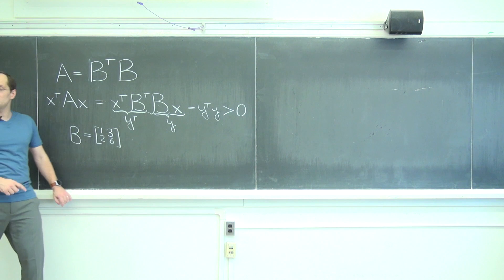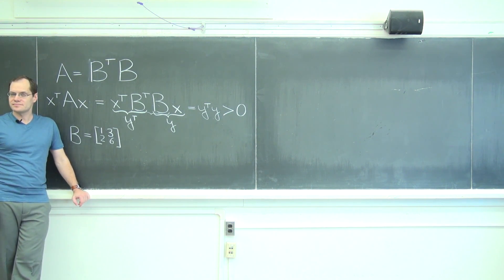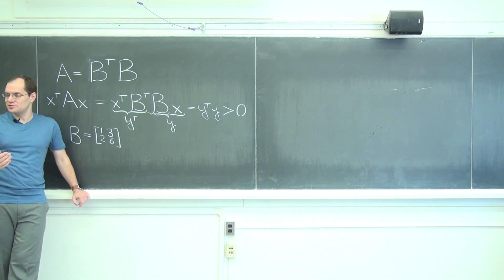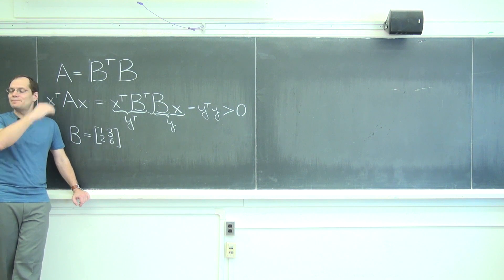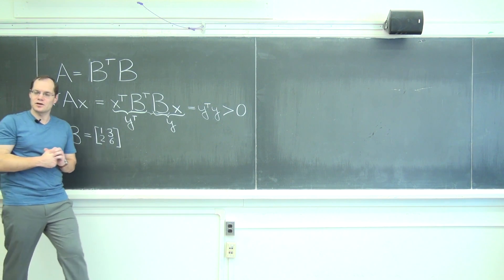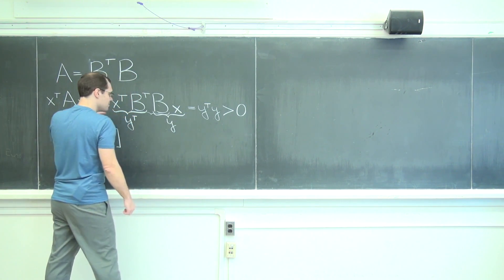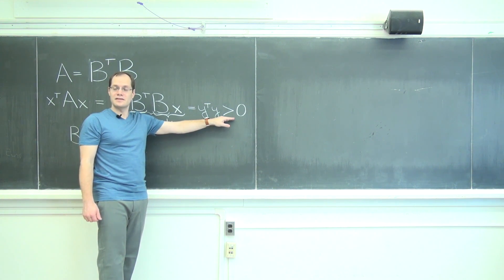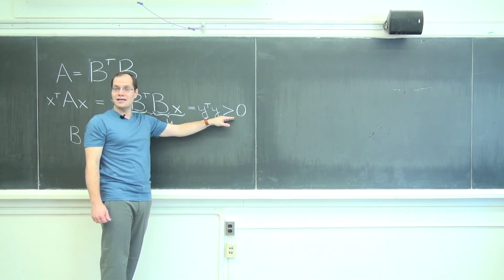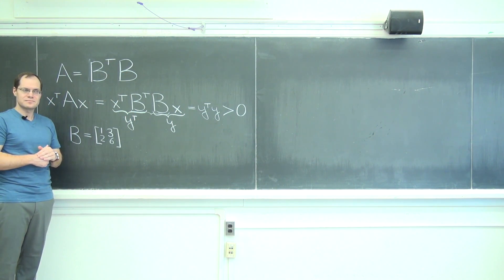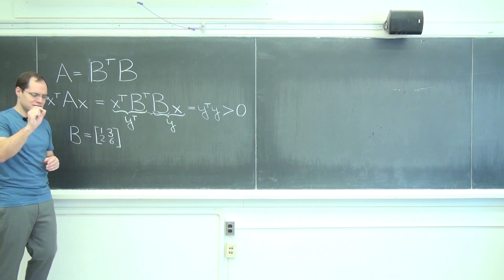Please go ahead and evaluate B transpose B. That'll give you your A, and then for a 2 by 2 A you know the criterion for positive definiteness. The top left entry needs to be positive and the determinant needs to be positive. See if it works. If this argument is correct it will work, the result will be positive definite. But if it's not, then there is something wrong with this argument and you'll have to tell me what it is. You have to pinpoint the statement that was wrong.